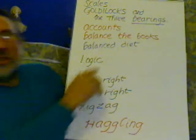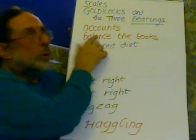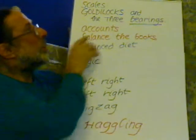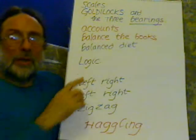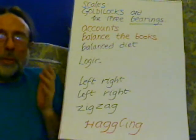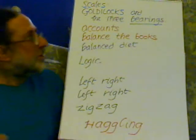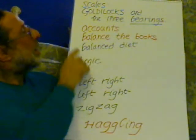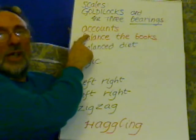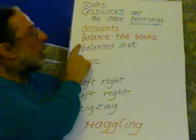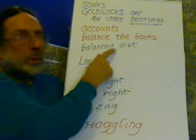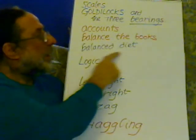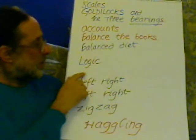The scales is what the story of Goldilocks is about — Goldilocks and the three bearings — up, down, or balanced. This is the accounts department: to balance the books, balance diet.